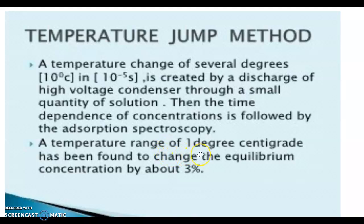A temperature range of 1 degree centigrade has been found to change the equilibrium concentration by above 3 percent. It is an average determination of temperature jump method.